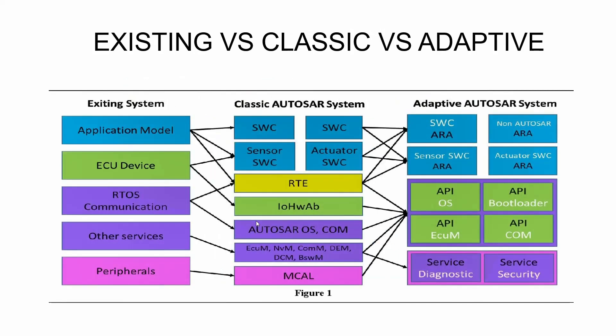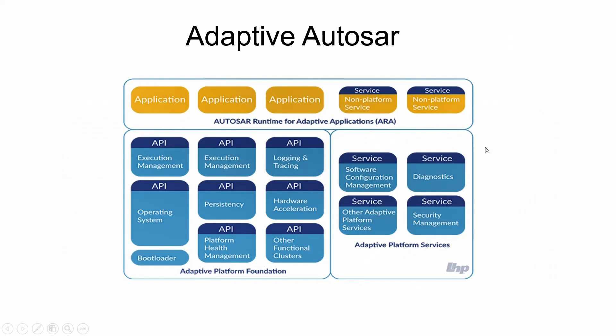Now let's analyze why the Adaptive AutoSAR platform is needed. Take the example of Advanced Driver Assistance Systems (ADAS). ADAS is based on a set of sensors like LiDAR, radar, and high-resolution cameras. The data collected from these sensors needs to be processed to create a model of the environment outside the vehicle. Based on this environmental model, ADAS assists the driver during braking, parking, or even driving, as in the case of autonomous driving. To achieve such fast communication, in-vehicle bus systems like CAN, LIN, and FlexRay are not enough.